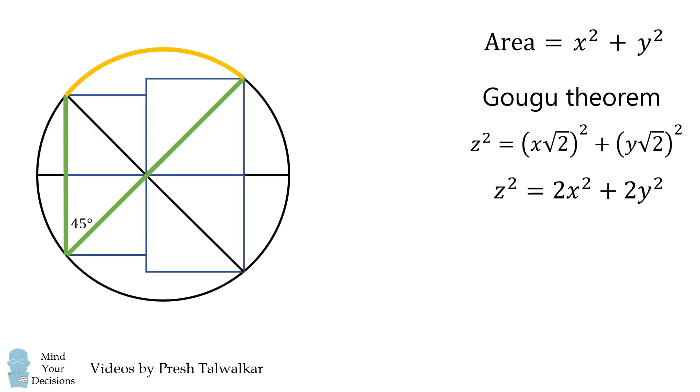We can thus calculate the measure of this circular arc by the inscribed angle theorem. It'll be equal to 2 times 45 degrees, or 90 degrees.